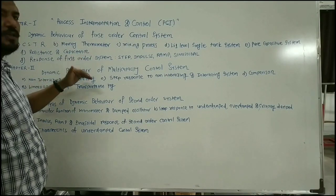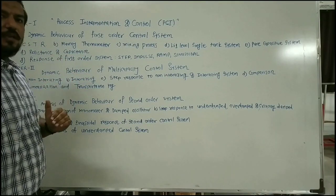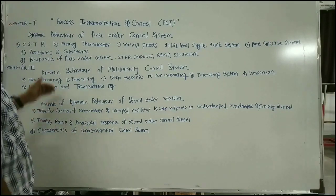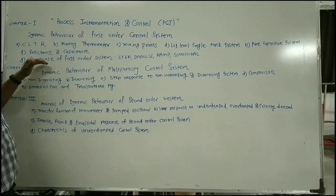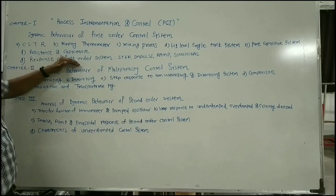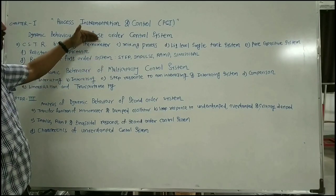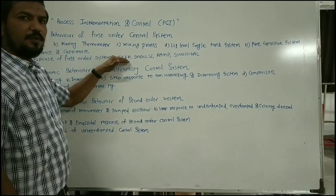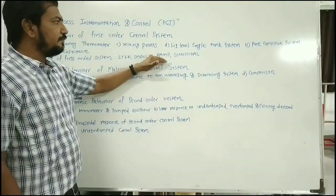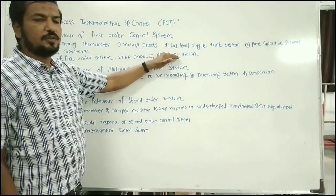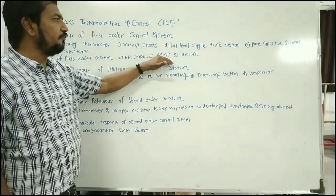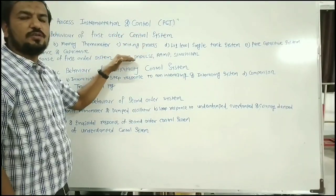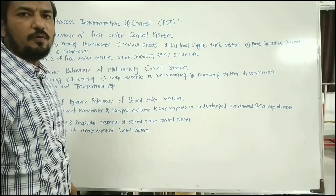Once you have completed that, by considering these systems you have to provide input to them — these are called forcing functions. The latter part of this unit covers the response of the first order system: how the first order system responds when given inputs such as step, impulse, ramp, and sinusoidal forcing functions. These are the four types of forcing functions, and you have to study the response equations for the first order system.